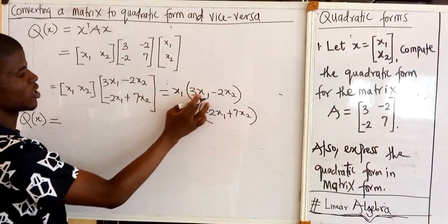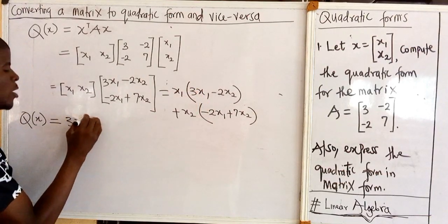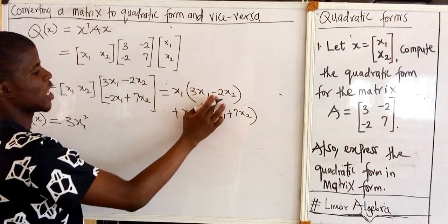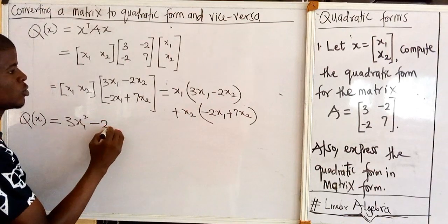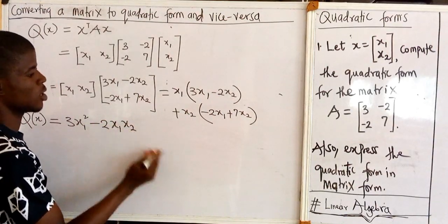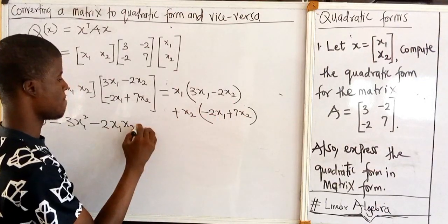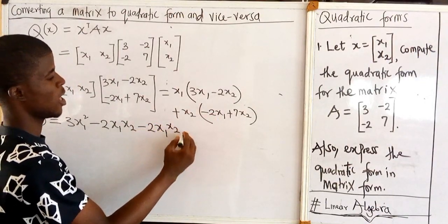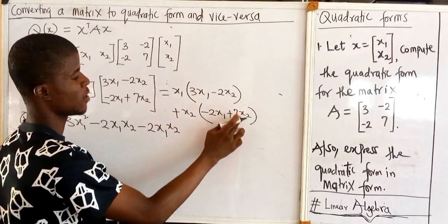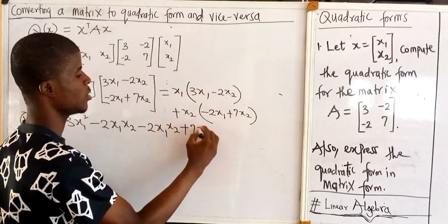x1 times 3x1 is 3x1 squared, then x1 times minus 2x2 is minus 2x1x2, then x2 times minus 2x1 is minus 2x1x2, and lastly x2 times 7x2 is plus 7x2 squared.